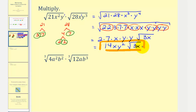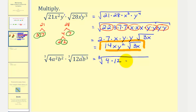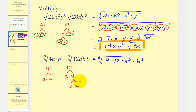Next we have the cube root of 4a²b² times the cube root of 12ab³. The coefficients are one, so we multiply the radicands: the cube root of 4 × 12 × a² × a (which is a³) × b² × b³ (which is b⁵). Since we have a cube root, we look for groups of three equal factors. The prime factorization of 4 is 2 × 2, and 12 = 3 × 4 = 3 × 2 × 2, giving us four factors of 2 and one factor of 3.